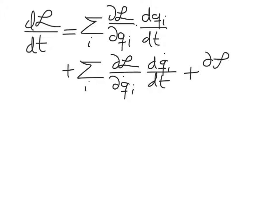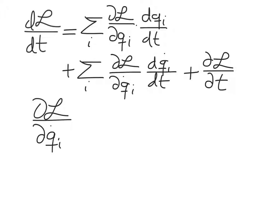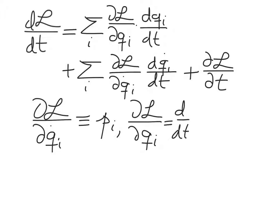We know that by definition the partial of the Lagrangian with respect to the generalized velocity qi dot is defined to be the generalized momentum pi. And the Euler-Lagrange equation tells us that the qi partial derivative of the Lagrangian is just equal to the total time derivative of the Lagrangian with respect to qi dot — in other words, the time derivative of the generalized momentum pi. So we can rewrite the total time derivative of the Lagrangian using these two equations.